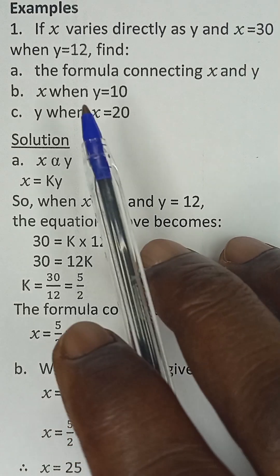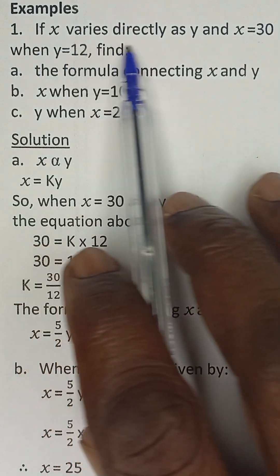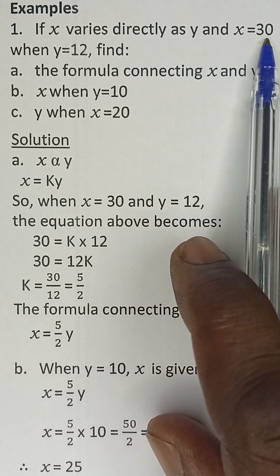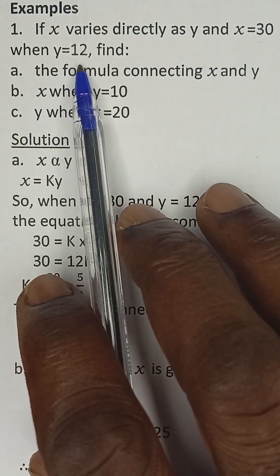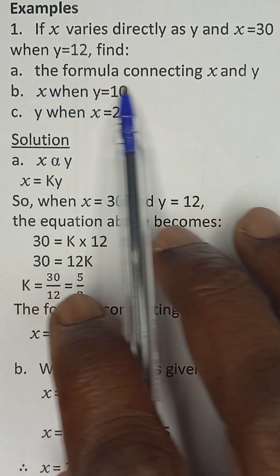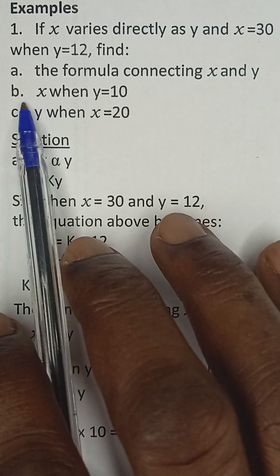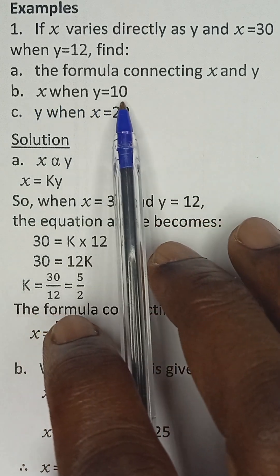Alright, let's look at this question on variation. If X varies directly as Y and X equals 30 when Y equals 12, then I should find the formula connecting X and Y, and B, X when Y is equal to 10.